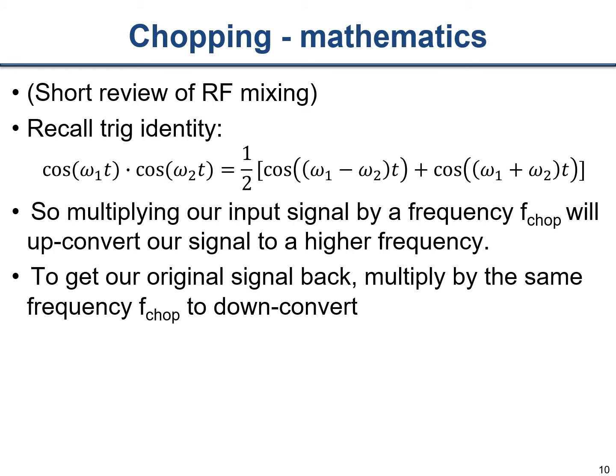Mathematically this works like mixing in RF: cos(ω₁t) × cos(ω₂t) produces components at (ω₁+ω₂) and (ω₁−ω₂). So multiplying our input signal by f_chop up-converts it to f_chop ± f_signal. To recover the original signal, we multiply again by the same f_chop, which brings it back to the original frequency ω₁.